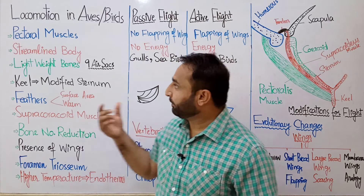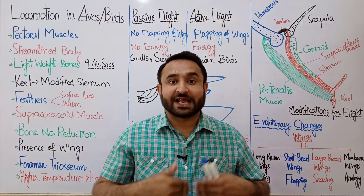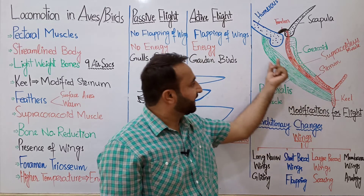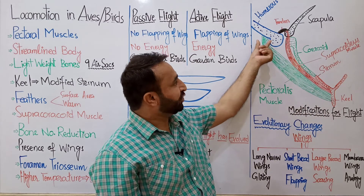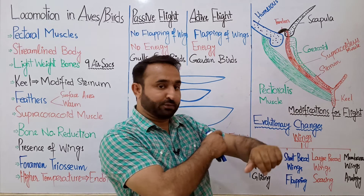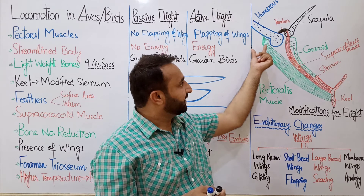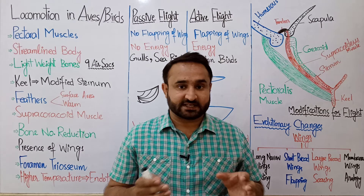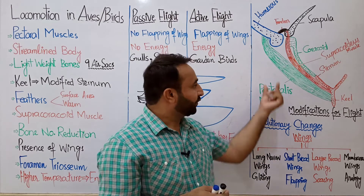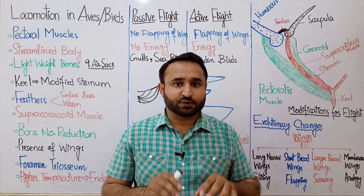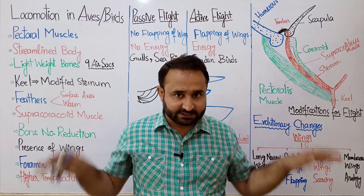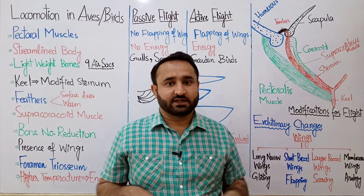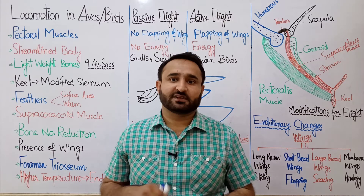First of all, pectoral muscles, which are also called pectoralis muscles. In this diagram, they are shown in green. They are pectoral muscles connected with the humerus bone and with the keel — a modified sternum or a process of sternum. They are attached to it, and they flap the wings. The downward stroke — the power stroke — is provided by the pectoralis muscles.